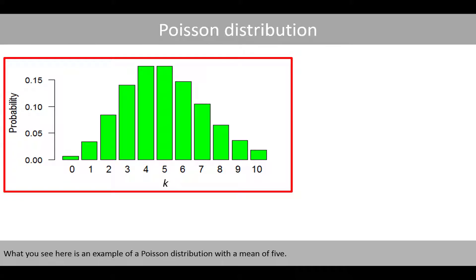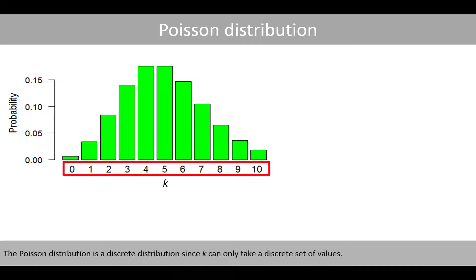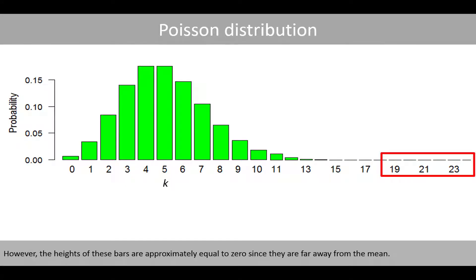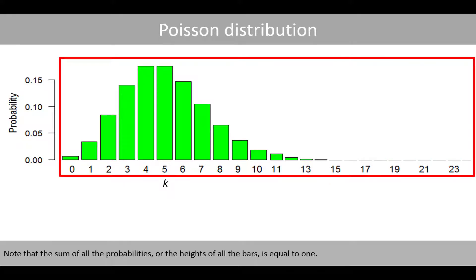What you see here is an example of a Poisson distribution with a mean of 5. The Poisson distribution is a discrete distribution since k can only take a discrete set of values. Note that I only plotted the bars for which k goes from 0 to 10, but the distribution continues to infinity. However, the heights of these bars are approximately equal to 0 since they are far away from the mean. Note that the sum of all the probabilities, or the heights of all the bars, is equal to 1.